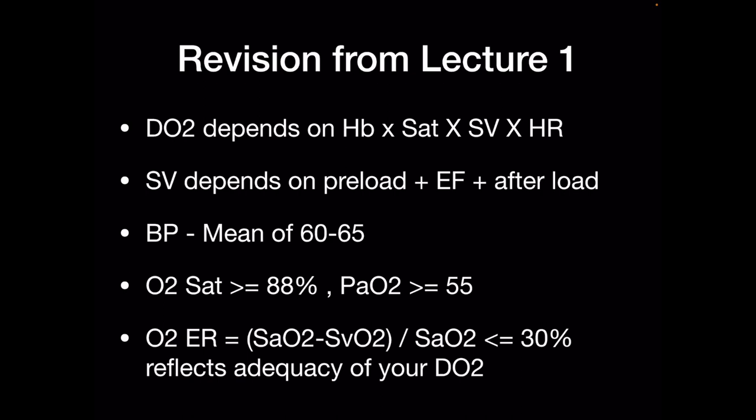A mean blood pressure of 60 to 65 is okay to support life. An oxygen saturation of 85 to 88% might be enough provided it is circulating with a good cardiac output — because cardiac output is what really drives oxygen delivery. There's no use increasing oxygen saturation from 88 to 94% if you decrease cardiac output from 7 to 5. That won't help. A PaO2 of 55 may be enough to support life in a critically ill patient.